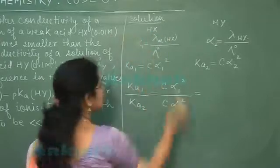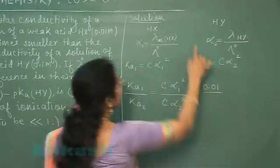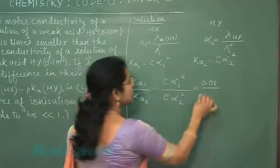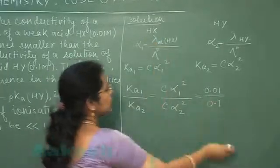For HX, this C is 0.01. For HY, this concentration is given 0.1. Alpha 1 हमने यहाँ पर देखा. इसको calculate करके लेख देते हैं.